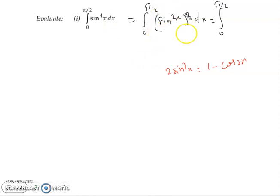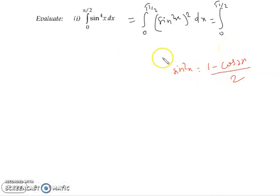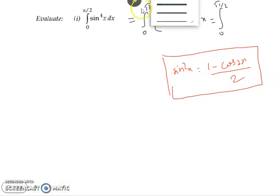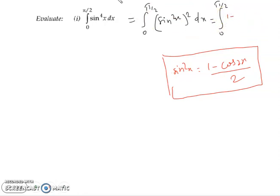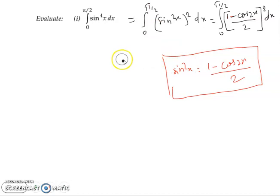Similarly, we can write sin⁴x as [(1 - cos2x)/2]² dx with the limit from 0 to π/2. We will now apply this formula going forward.